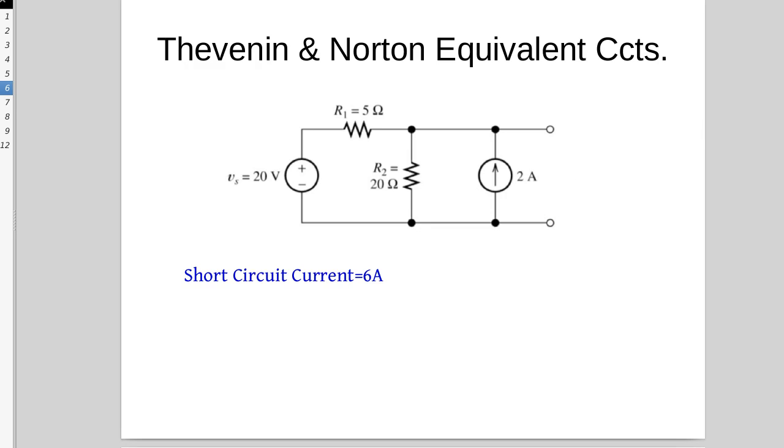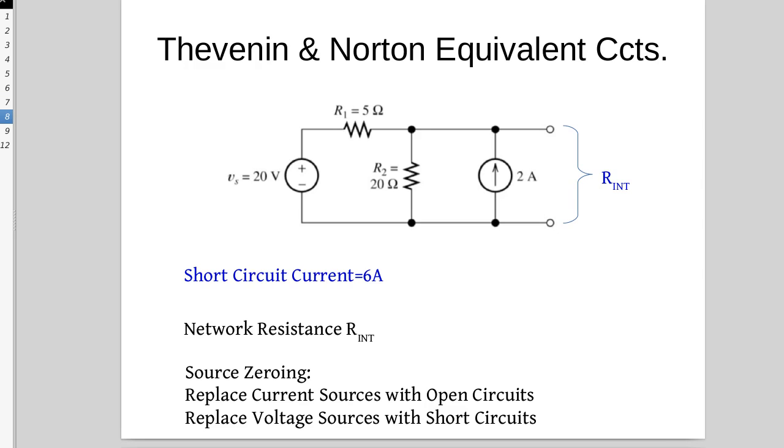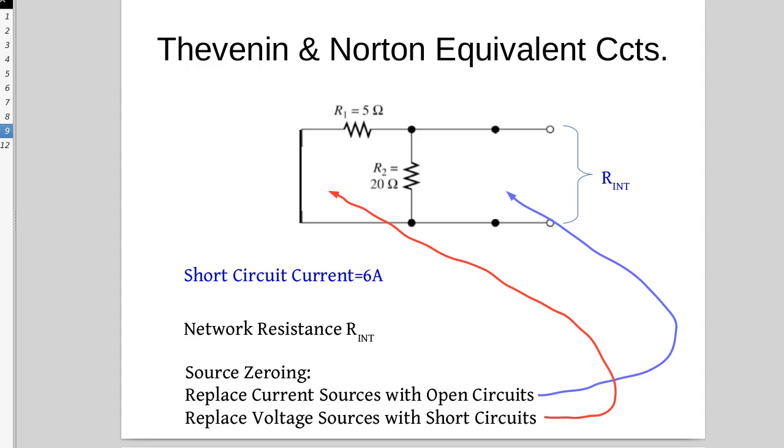So now let's look for the network resistance. If we use source zeroing, and the source zeroing is we replace the current sources with open circuits and we replace the voltage sources with short circuits, this is our new network.